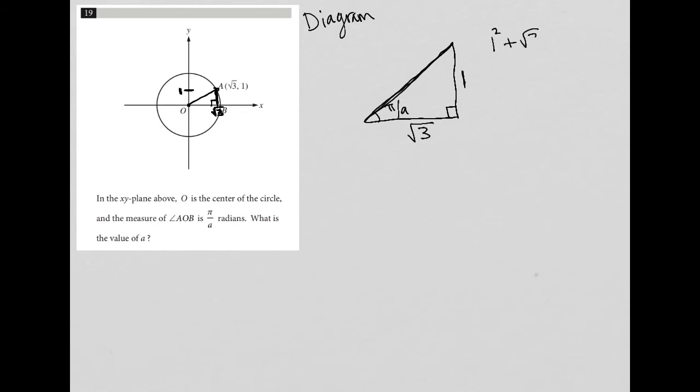One squared plus square root three squared is one plus three, which equals C squared. This is Pythagorean, coming from A squared plus B squared equals C squared. So one plus three equals C squared. Four equals C squared. And therefore, C is equal to two. So this is two.